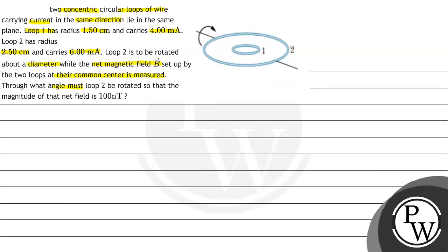Through what angle must loop 2 be rotated so that the magnitude of that net field is 100 nanotesla. Figure 29-60 is given to us here. In this two concentric circular loops are given and we have to rotate loop number 2. So let us first revise the key concept behind this question.